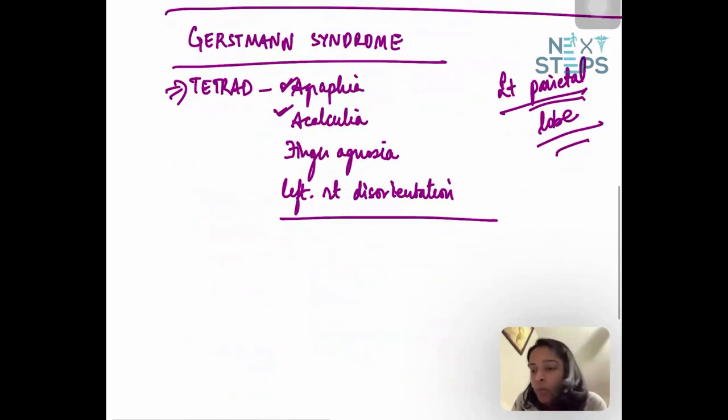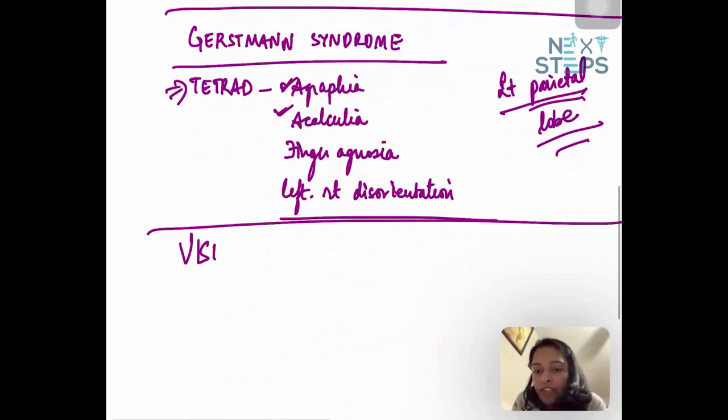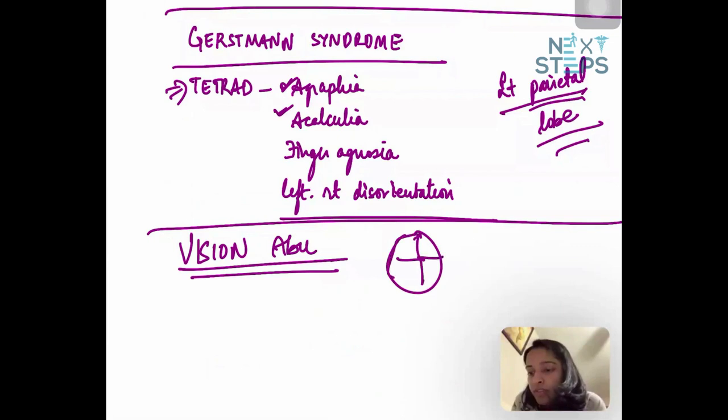The last option is occipital. Occipital lobe infarcts are characterized by vision abnormalities. Based on the location of the infarcts, different fields of vision might be involved, but there would definitely be a vision abnormality.